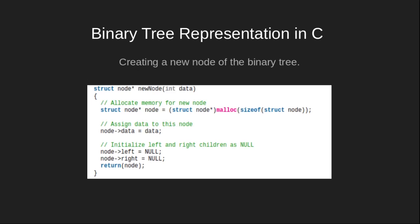This code creates a new node in the binary tree. The first statement dynamically allocates memory for a new node. The second statement stores the data value in the data part of the node. The next two statements initialize the left and right child pointers of the node to null. Finally, the node is returned.